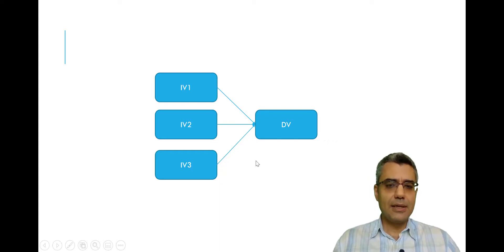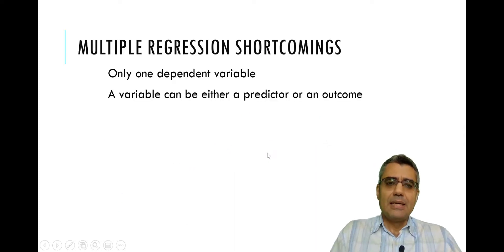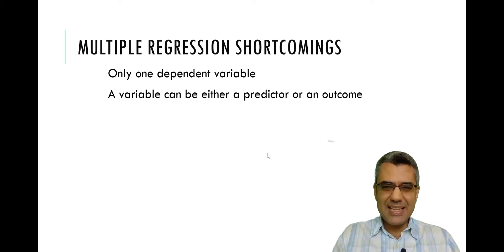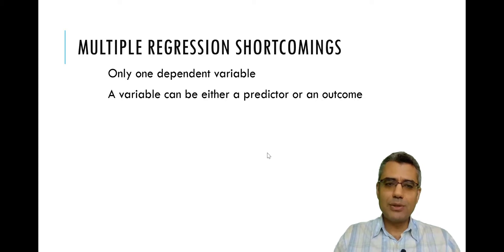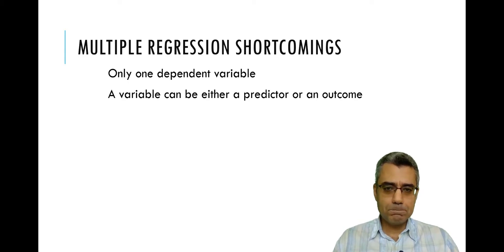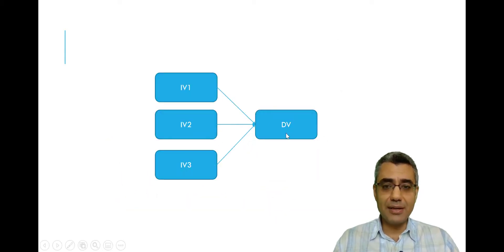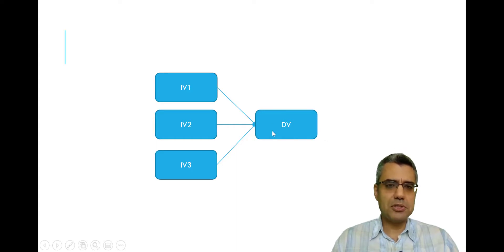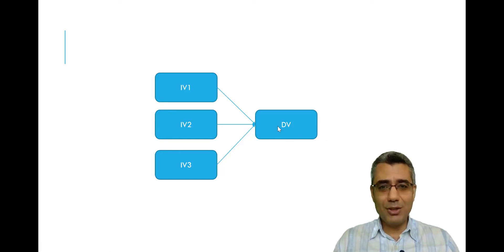Multiple regression analysis has some limitations. Number one: you can have only one dependent variable in your model. If you have a model with only one dependent variable, there is no issue — you can use multiple regression analysis.